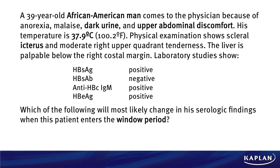The liver is palpable below the right costal margin. Lab studies show some things that should be familiar to you — thinking about hepatitis B. We've got HBS antigen positive, HBS antibody negative, anti-HBC IgM positive, and HBE antigen positive. These are different types of serum markers you're going to see commonly on test day.